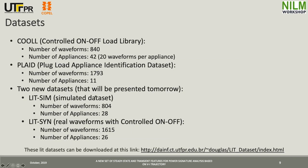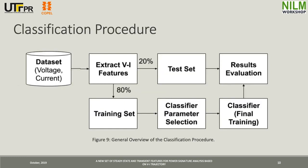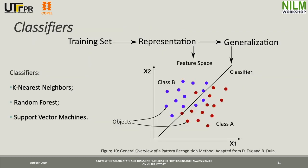These two new datasets include multiple loads. After extracting all features of the dataset, 80% of data was used to train the classifier and select the parameters, and 20% was used to test the classifier. This is a typical procedure in machine learning methods. In the classification stage, we used three commonly used classifiers in order to compare the results: KNN, Random Forest, and Support Vector Machines. They are all based on supervised classification.